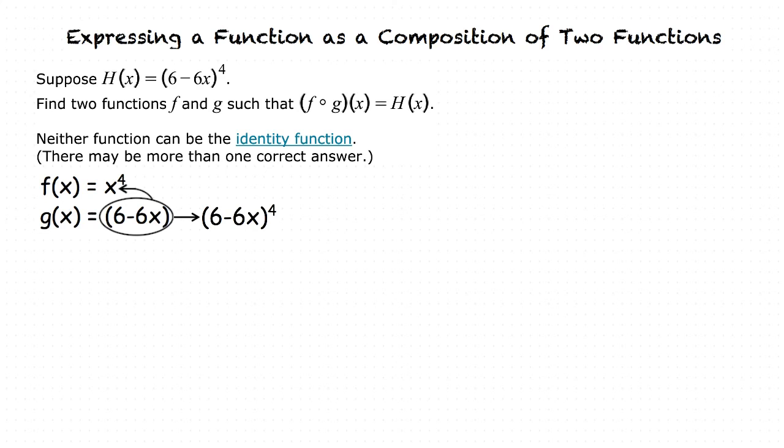Because we have a quantity to the fourth power, f of x could be x squared, provided that g of x also has the exponent of 2. This is because we can use the power of a power rule, as a value squared to the second power is the same as taking something to the fourth power.